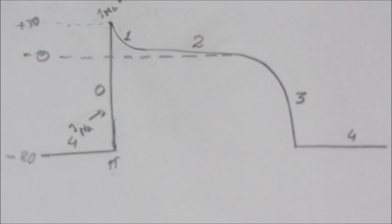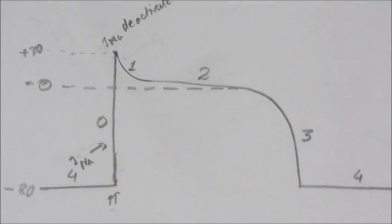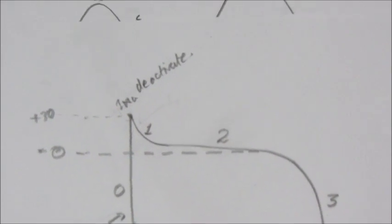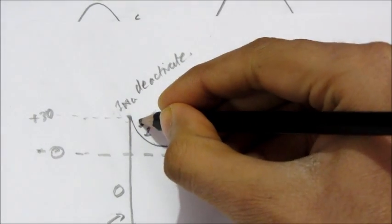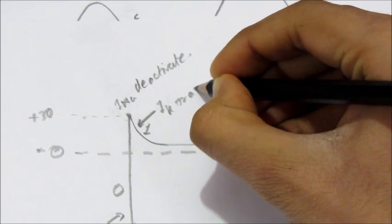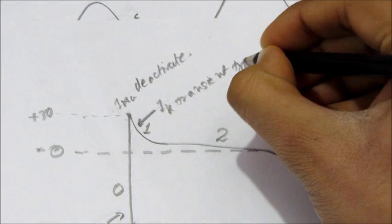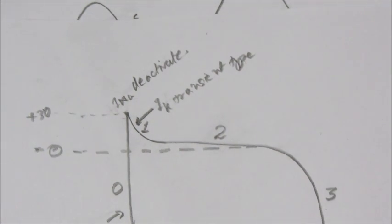And potassium channels of transient type, they open. Here, potassium transient type, they open, leading to fast repolarization of action potential.